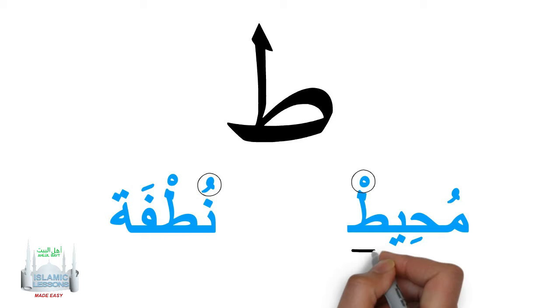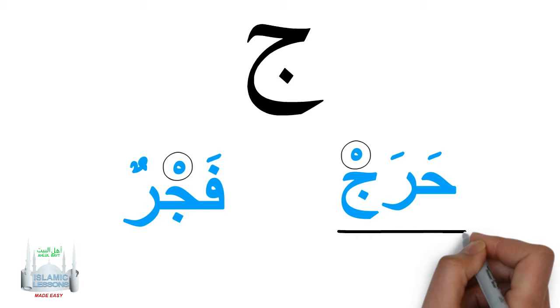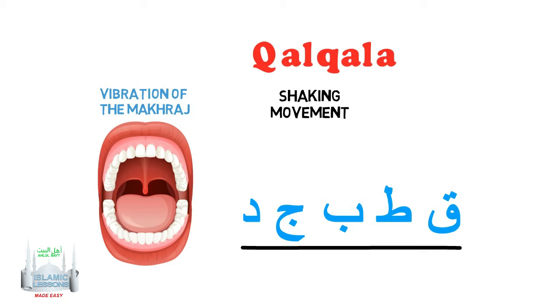The letter Dal — the Dal has a sukoon. It reads 'Muhyatt' and they have a sukoon. The letter Jim — the Jim has a sukoon. It reads 'haraj,' and this reads 'fajarun.' All these letters are letters of Qalqala.